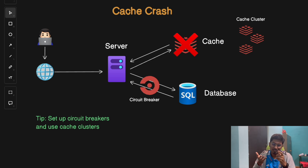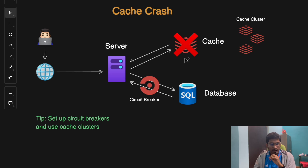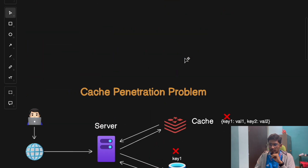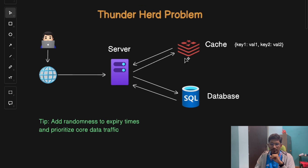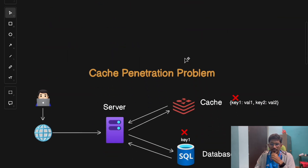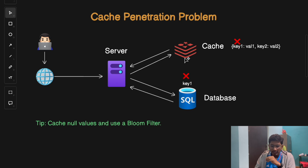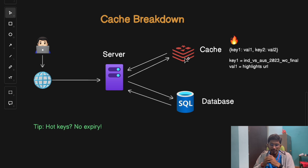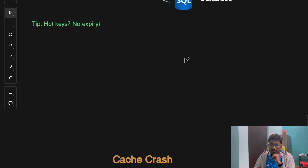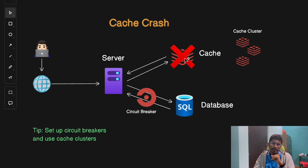Caching can feel like a double-edged sword — it's a lifesaver when it works, but if you're not prepared for these four problems, it can bring your application to its knees. To recap: the Thunder Herd problem — randomize key expiry times; the Cache Penetration problem — cache null values and use a Bloom filter; the Cache Breakdown problem — never let hotkeys expire or set a custom expiry strategy; the Cache Crash problem — use a circuit breaker or cache clusters.